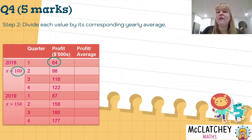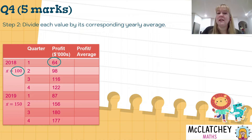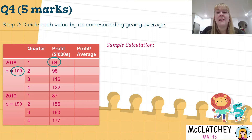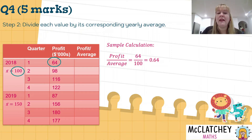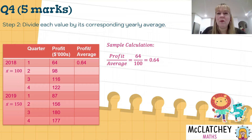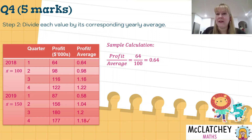Step two: take each value from a particular year and divide it by the yearly average for that year. For 2018 we divide those four data points by the average of 100, then repeat for 2019. It's a good idea to write 'sample calculation' and then show: 64 divided by 100 gives 0.64, which goes into the table. You'll need to build on the table as you go, adding more columns.